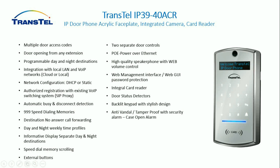Network configuration supports DHCP or static IP, so you can assign a static IP if needed for remote access. There is authorized registration with existing Voice over IP switching and SIP proxy, plus automatic busy and disconnect detection. 999 speed dialing memories are available for access control or multi-storey apartment dialing. Destination no-answer call forwarding will forward the call to another destination if unanswered. Day and night weekly time profiles — seven days a week — allow the access control phone to switch itself into day and night mode automatically if it doesn't have a soft switch managing that.